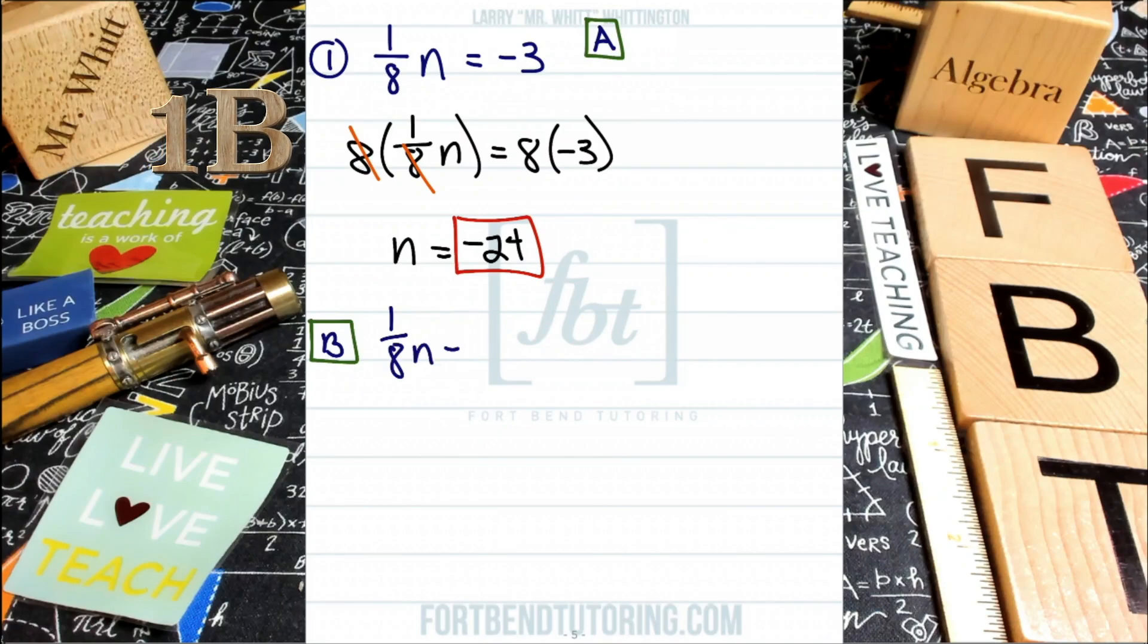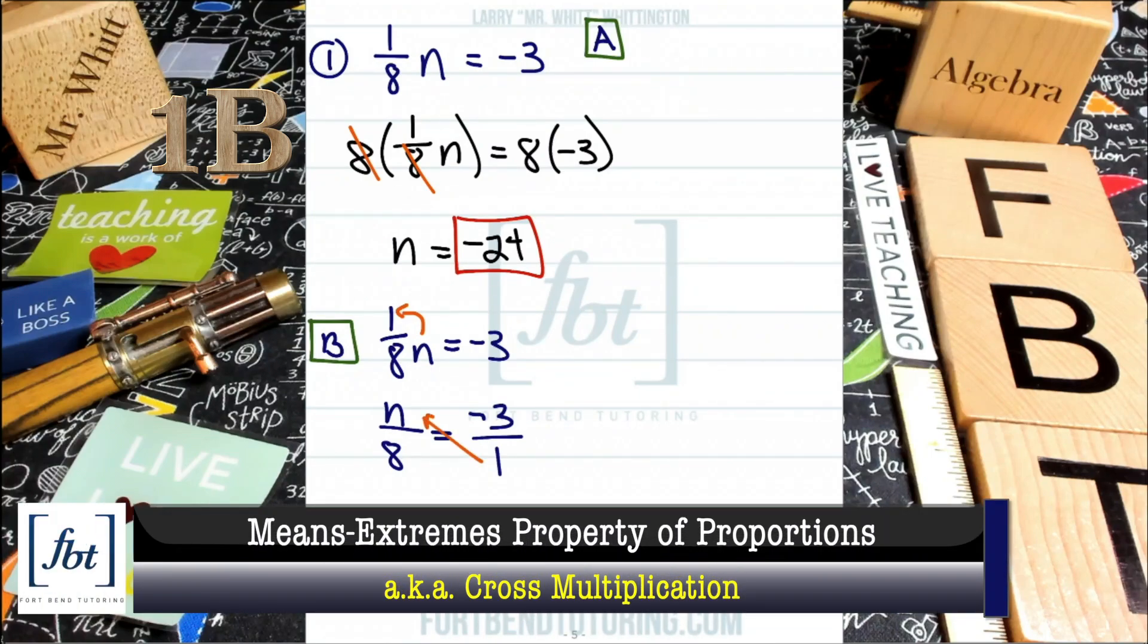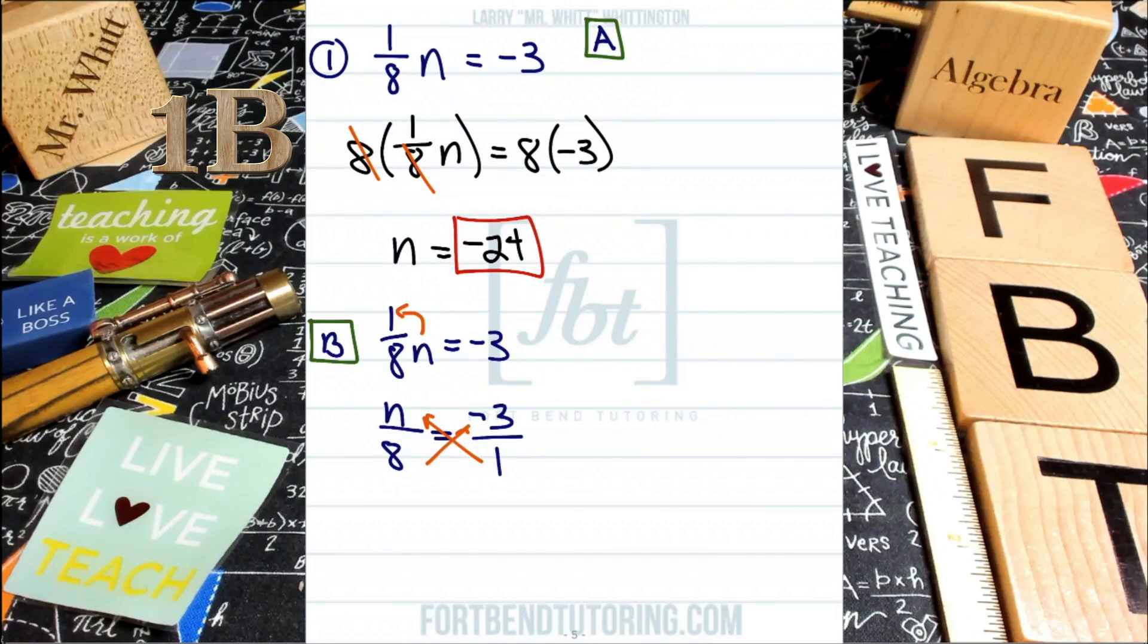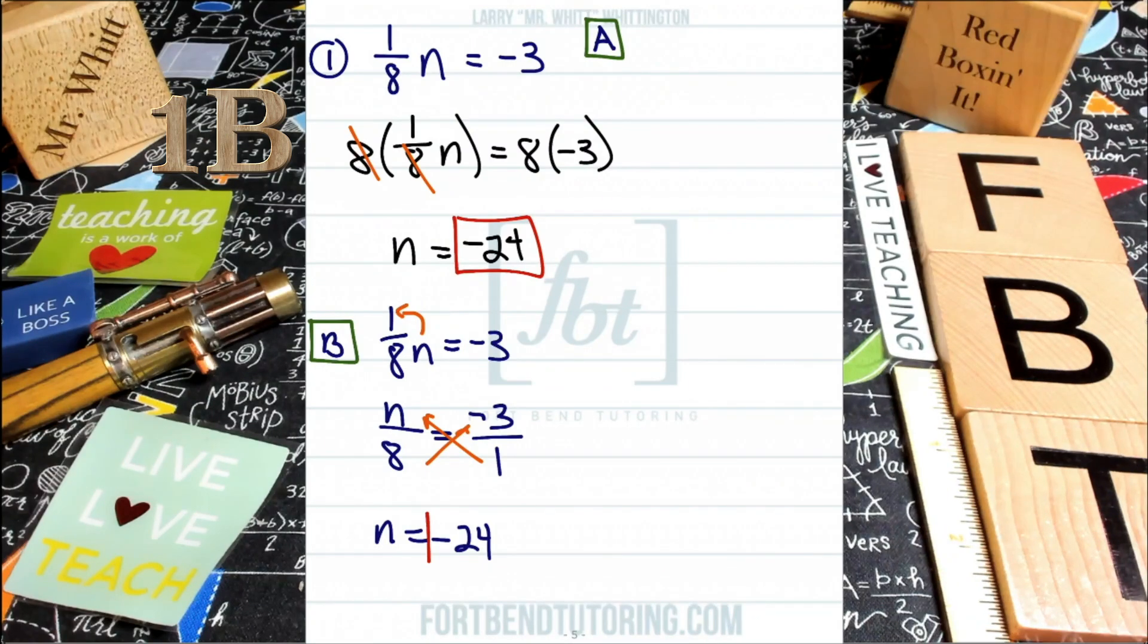In the second method I wanted to show you, we can set up the equation as a proportion. By doing that, you want to make sure that you place the variable in the numerator and that you convert both sides of the equation into a fraction. So here, 1 times n gives us n over 8. And on the right side, you can make this negative 3 divided by 1. Once you have a proportion set up, meaning a fraction set equal to another fraction, you can use what is called the extremes means method. That's another property that I wanted to share with you, but you may know it as cross multiplying. That's right. The tried and true, the go-to for a lot of students, the cross multiplication method. We're going to multiply this out and you'll end up with 1 times n which is n, and 8 times negative 3 which is negative 24. And once again, you will red box it. That was the second method I wanted to show you.